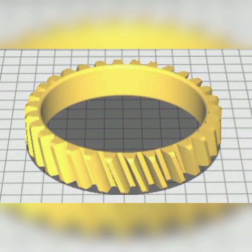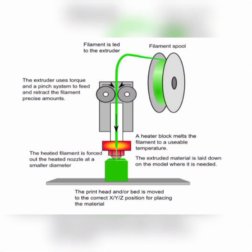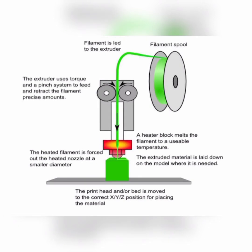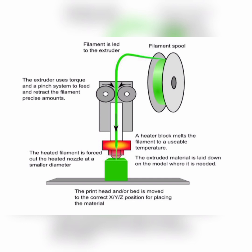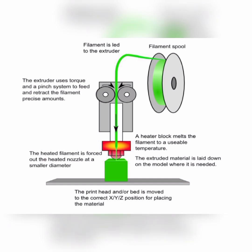The model you are seeing on the screen is generated using AutoCAD 3D software. The 3D printer is shown in a simplified figure format. A filament spool supplies filament in the form of wire to the extruder assembly. The extruder uses torque and a pinch system to feed the correct amount of filament to the nozzle. The heater block melts the filament to a required temperature and the heated filament is forced out from the nozzle to a smaller diameter.